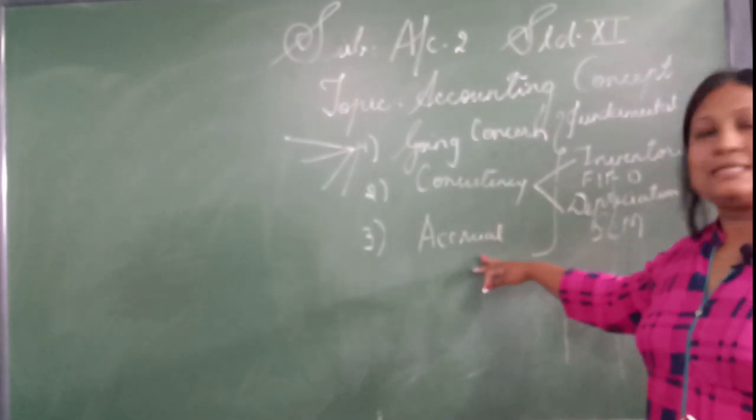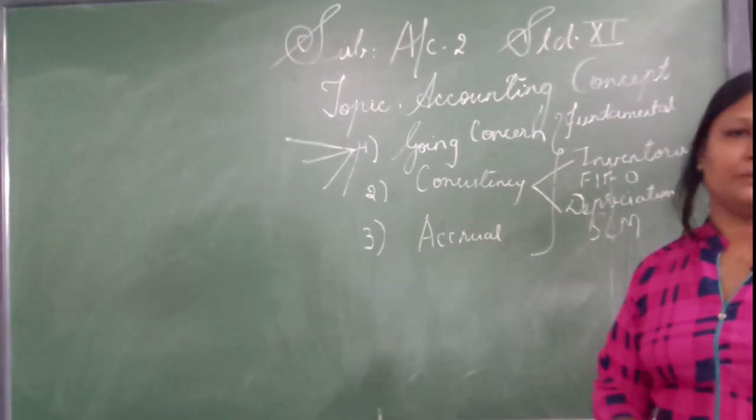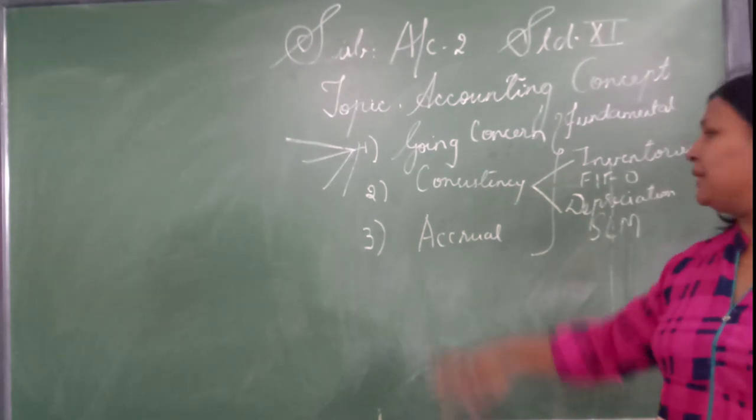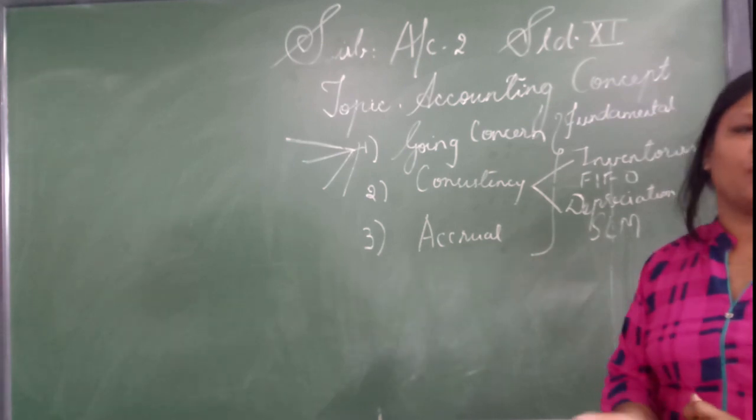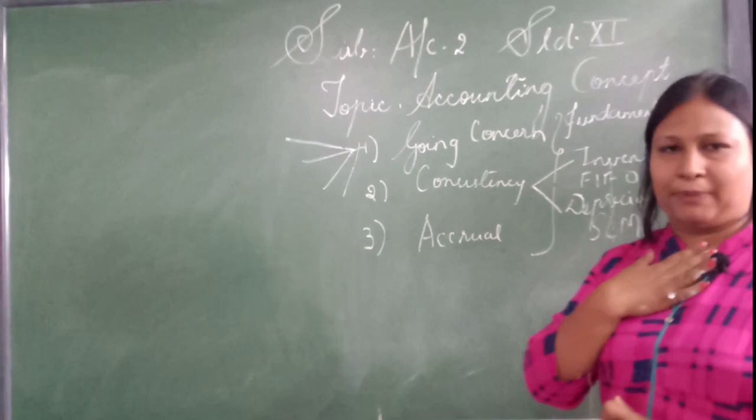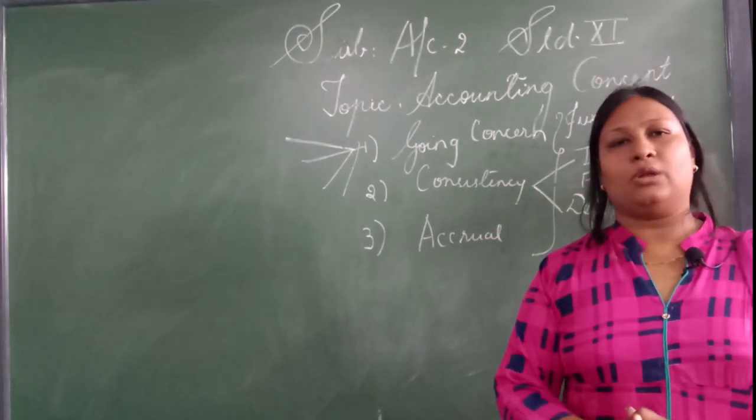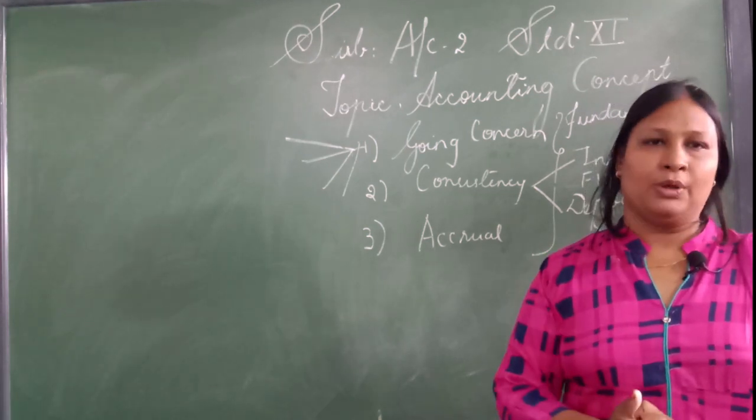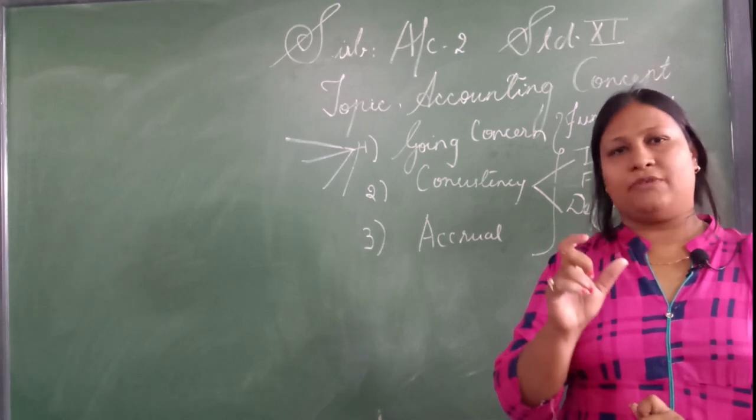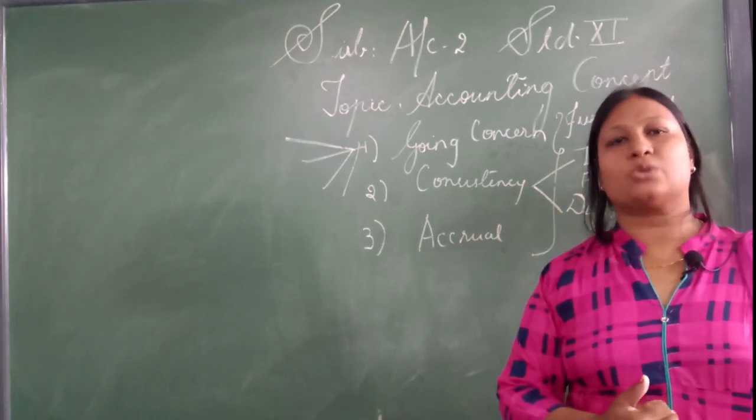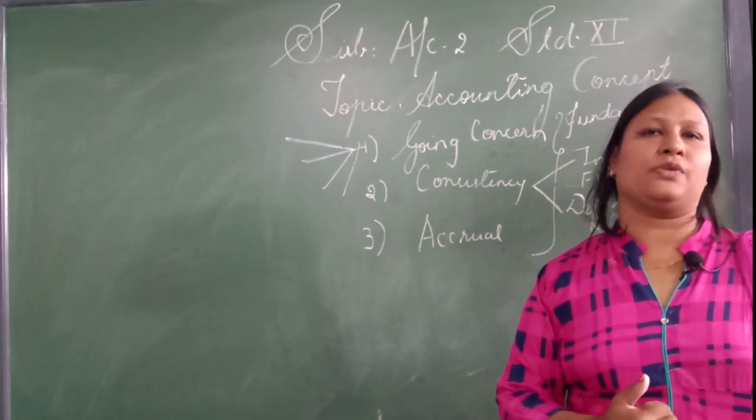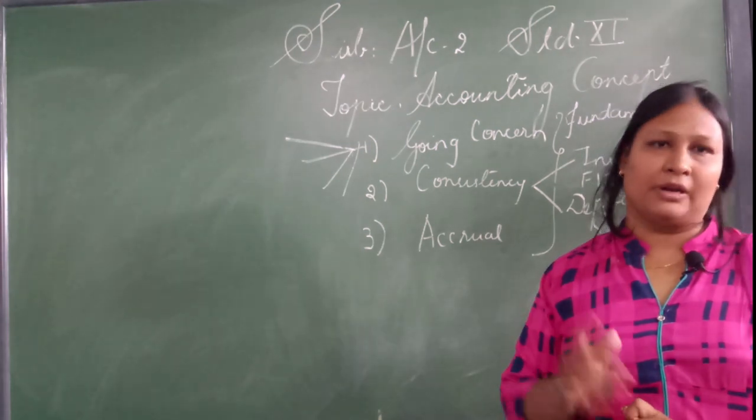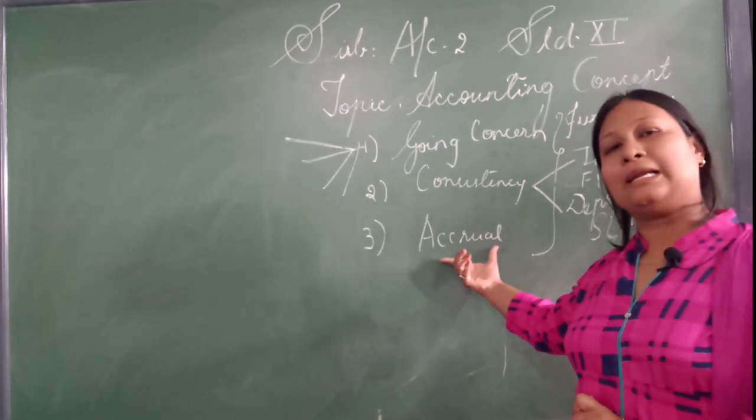Now let us move to the third one, that is accrual. Accrual means outstanding. If any of the expenses are outstanding, still we record in books of accounts based on this concept. Suppose I am paying my salary. Suppose I am paying salary next month on third. Suppose for Jan I will pay Jan salary on third Feb. So same way in March, salary will be paid in April. But books of accounts get closed in March. But still in our books of accounts we will record the salary of March, though we have not paid that. We are going to pay in April, but we will record that on the basis of this concept, that is accrual concept.